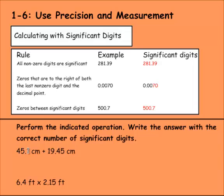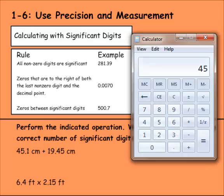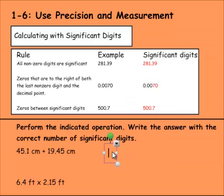Therefore, your answer is only allowed to have three significant digits if you're going to round it correctly. So let's do this one, 45.1 plus 19.45. That's going to give you 64.55. So let's write that down.